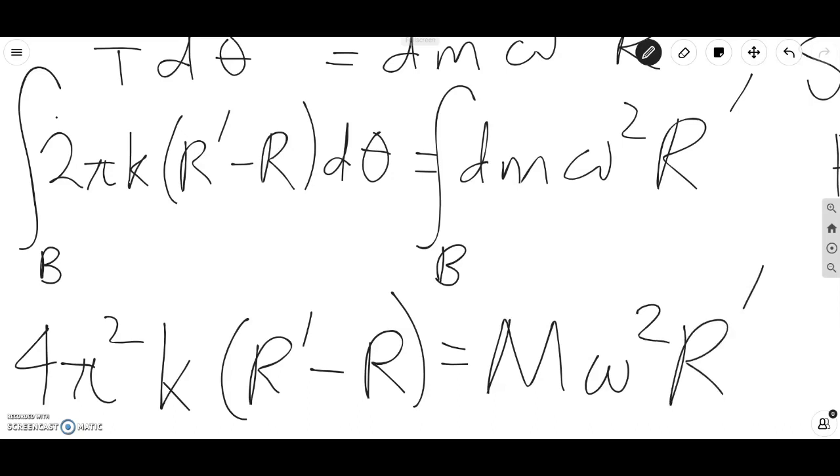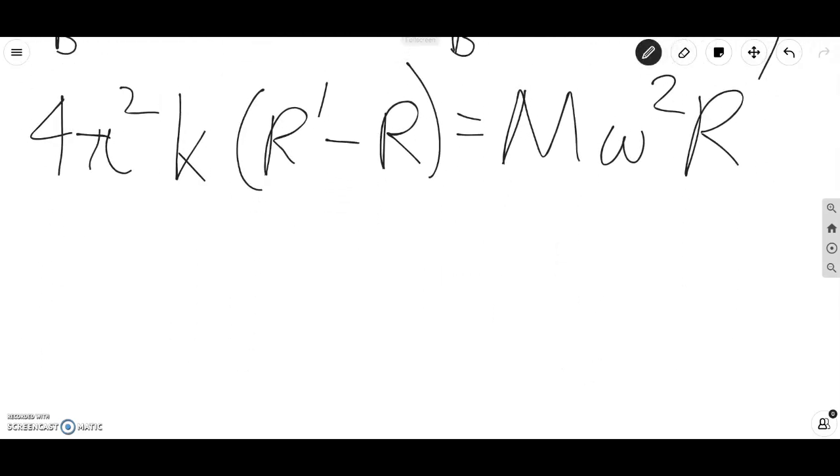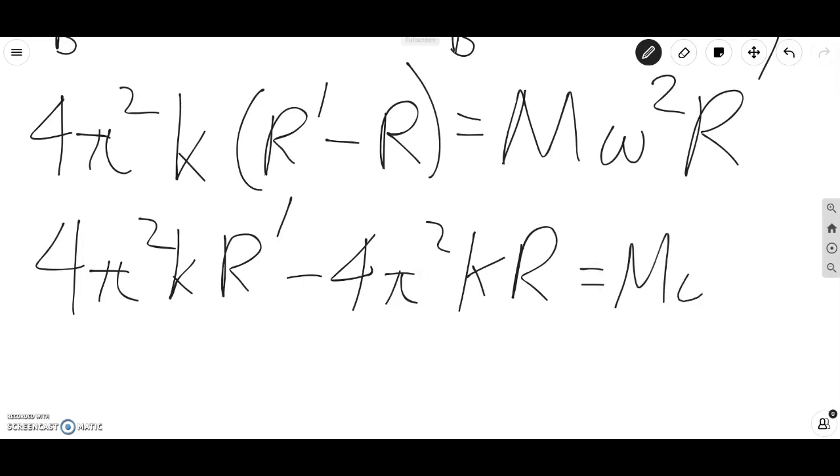Now all we have to do is simplify to solve for R prime. So we can use the distributive property. 4 pi squared K R prime minus 4 pi squared K R equals m omega squared R prime.